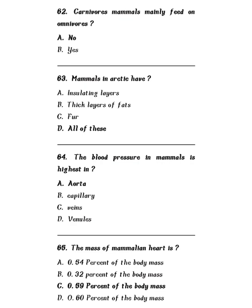Question 62: Carnivore mammals mainly feed on omnivores — no, carnivore animals do not feed on omnivores. Omnivores can feed on everything; carnivores feed on meat. So the answer is no. Question 63: Mammals in the Arctic have insulating layers, thick layers of fat, fur, or all of these? The correct answer is all of these — Arctic mammals have insulating layers, thick layers of fat, and fur. Question 64: Blood pressure in mammals is highest in — capillary, veins, venules, or aorta? Blood pressure in mammals is highest in the aorta.